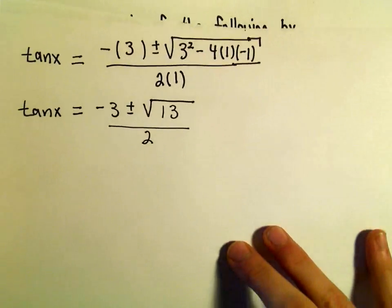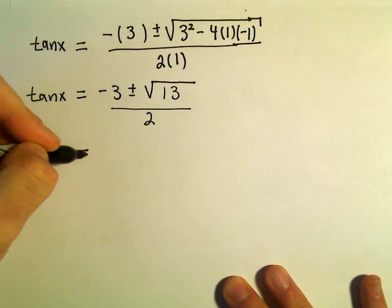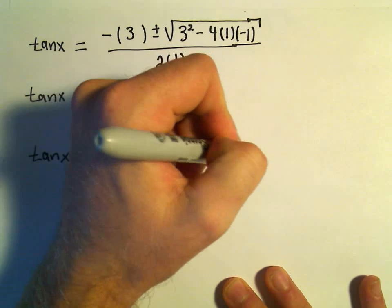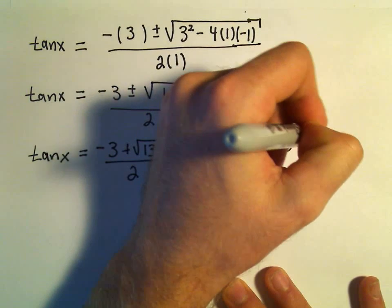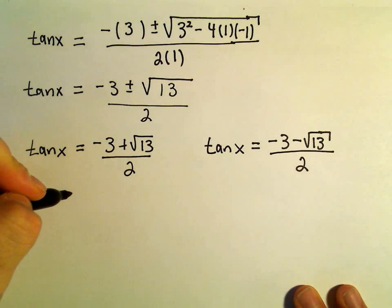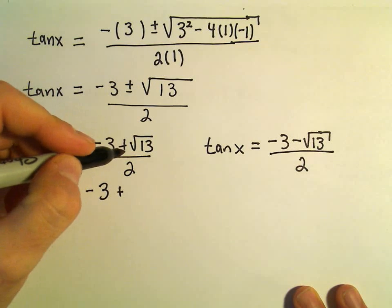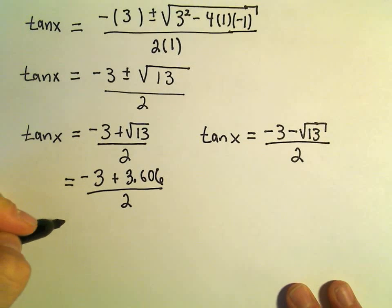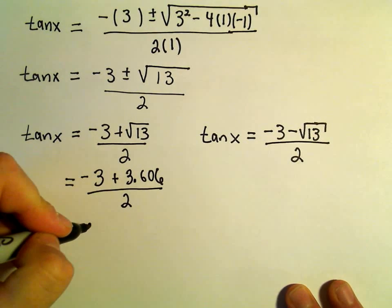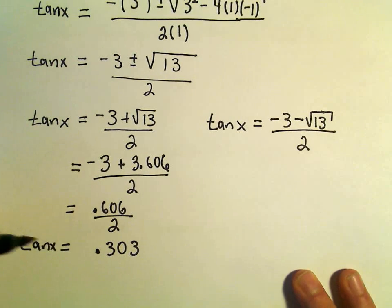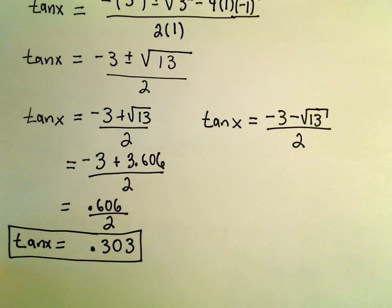We're going to find solutions in 0 to 2π. So we set up two equations. Tangent of x equals negative 3 plus the square root of 13 over 2. Approximating, the square root of 13 is about 3.606, so negative 3 plus 3.606 gives us 0.606 over 2, which gives us tangent x equals approximately 0.303.